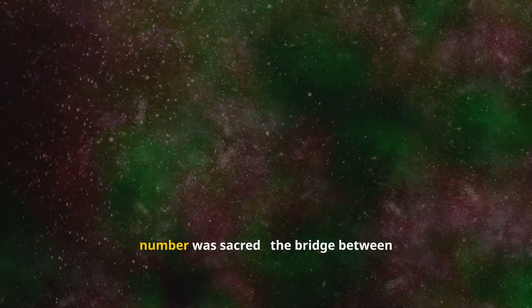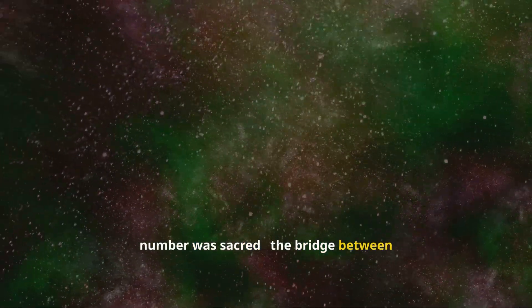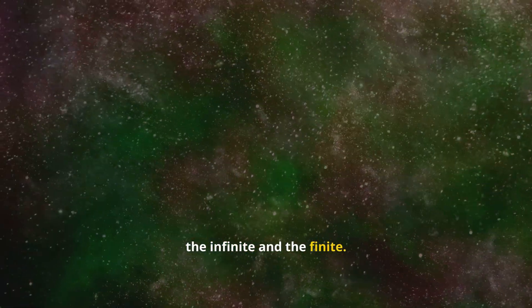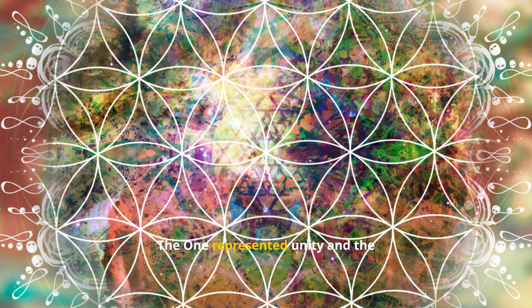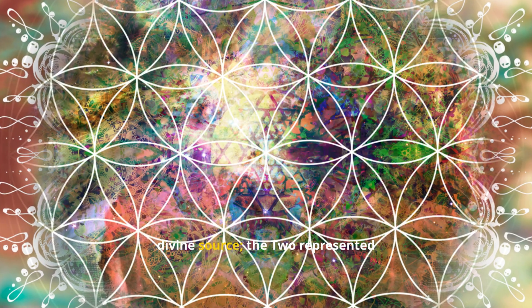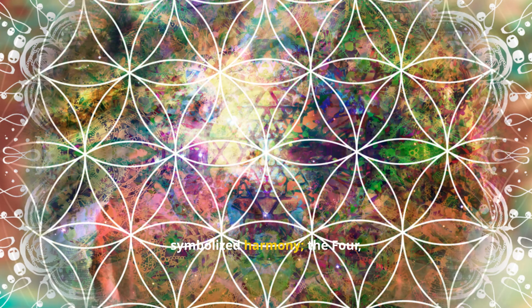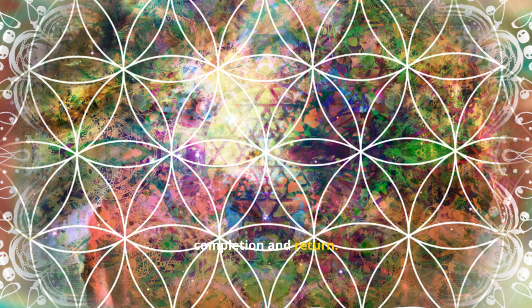For Pythagoras, number was sacred, the bridge between the infinite and the finite. Each number symbolized a principle of existence. The one represented unity and the divine source. The two represented duality and manifestation. The three symbolized harmony. The four, matter and structure. And the ten, completion and return.